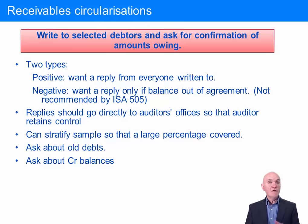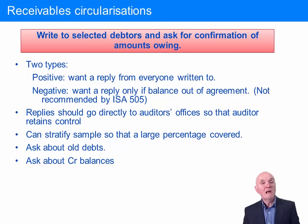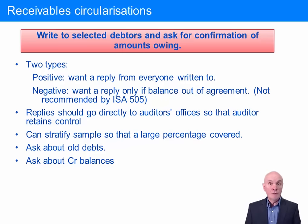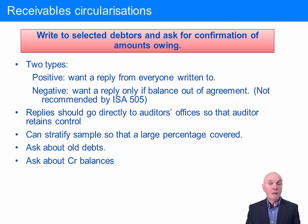Maybe on the last day of the year you sent an invoice to that customer which the customer hadn't received yet at year-end, so it shows as owing a small amount. Or maybe on the last day of the year the customer thought they'd paid you and transferred some money to you, but it hadn't got into your books yet. So most differences can be explained by timing differences; other differences are probably due to an error, either by your client or by their customer.